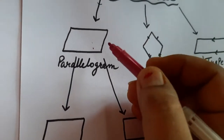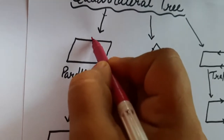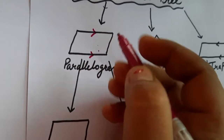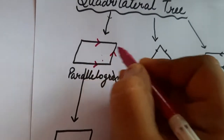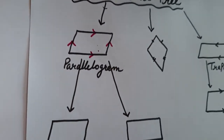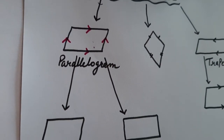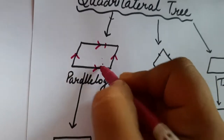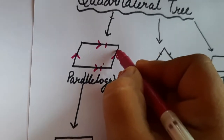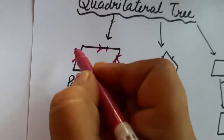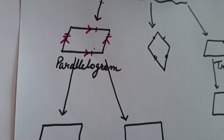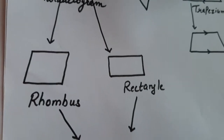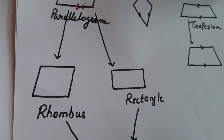In a parallelogram, all the sides are parallel. These two sides are parallel and these two sides are also parallel. Opposite sides are parallel and opposite sides are equal — these two sides are equal and these two sides are also equal.